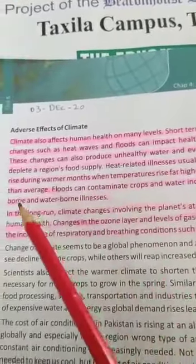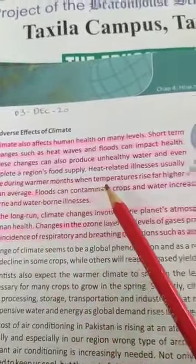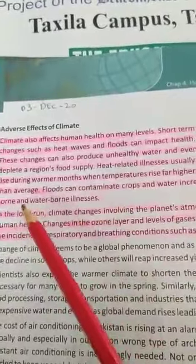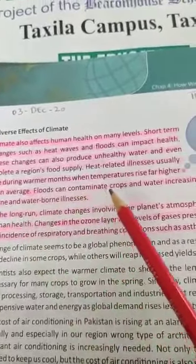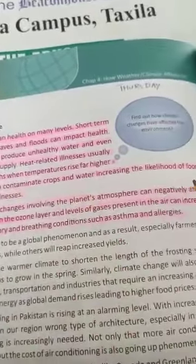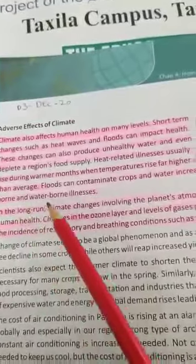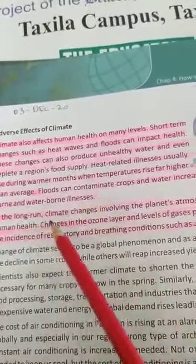Heat related illness usually rises during warmer months when the temperature rises far higher than average. Floods can contaminate crops and water, increasing the likelihood of foodborne and waterborne illnesses.